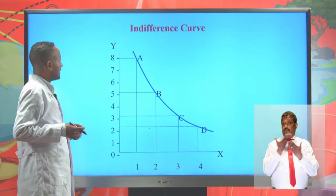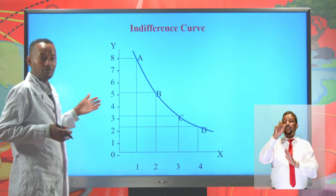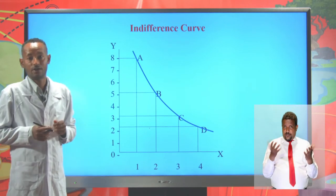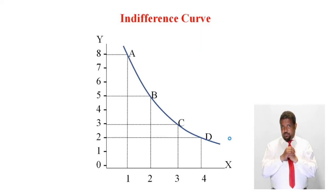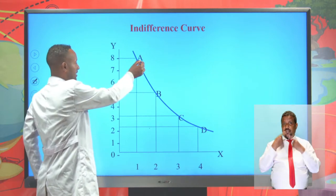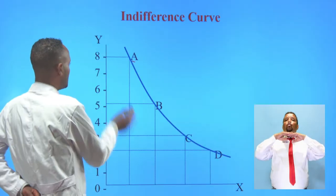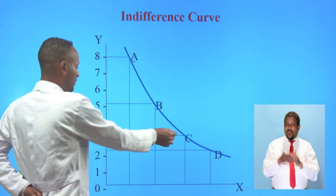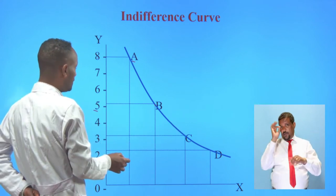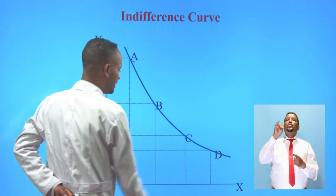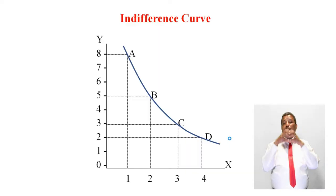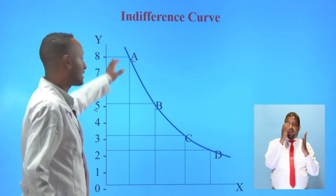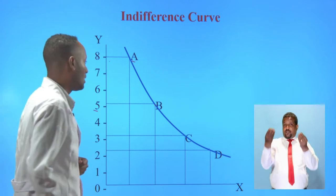Let's represent the indifference states on a curve called the indifference curve. The indifference curve shows the various combinations of two commodities that gives a consumer equal level of satisfaction. At combination A, the satisfaction from one unit of X and eight units of Y equals combination B, which is two units of X and five units of Y. At combination C it equals three units of X and three units of Y, and at combination D, four units of X and two units of Y. When we join points A, B, C and D together, we get the indifference curve.